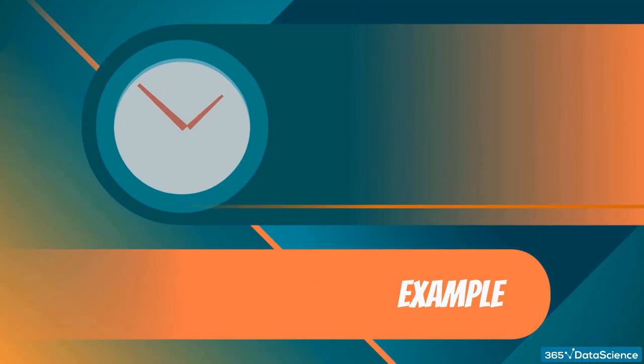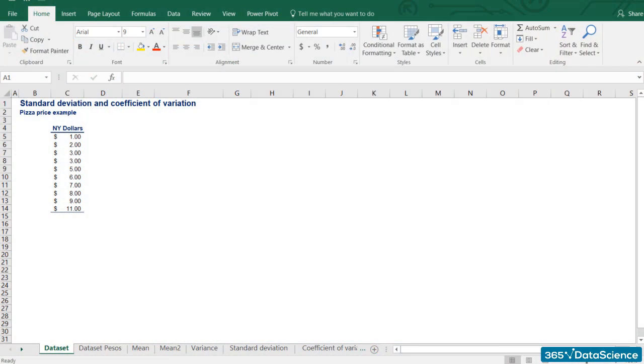To make sure you remember, here's an example of a comparison between standard deviations. Let's take the prices of pizza at 10 different places in New York. They range from $1 to $11.